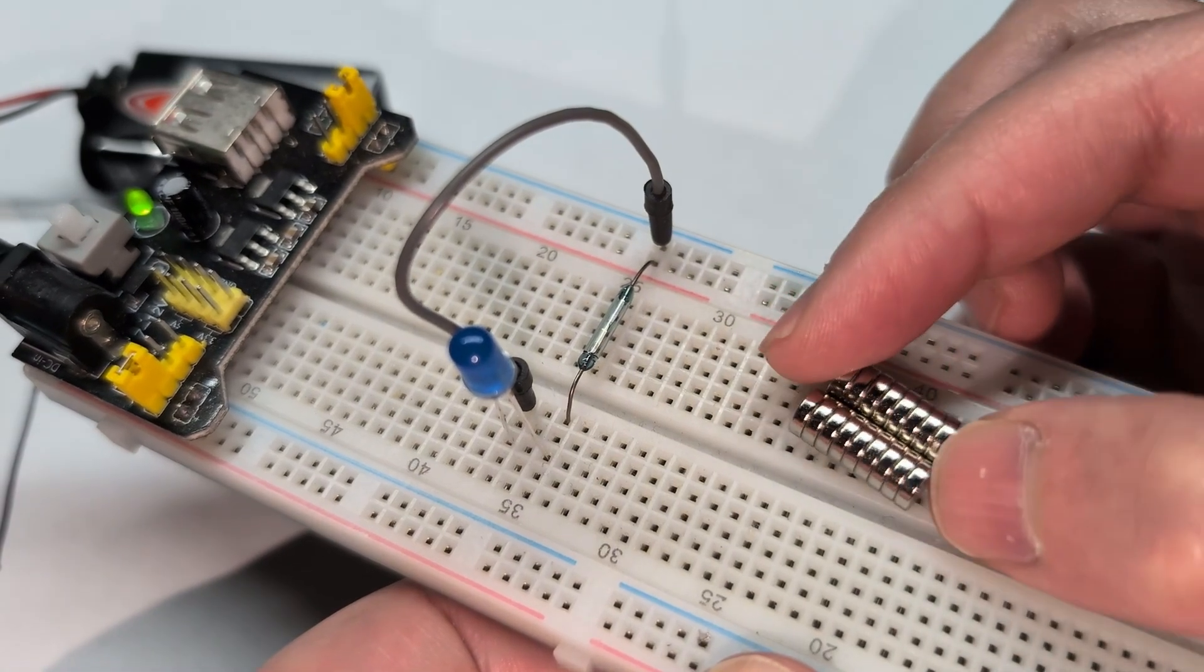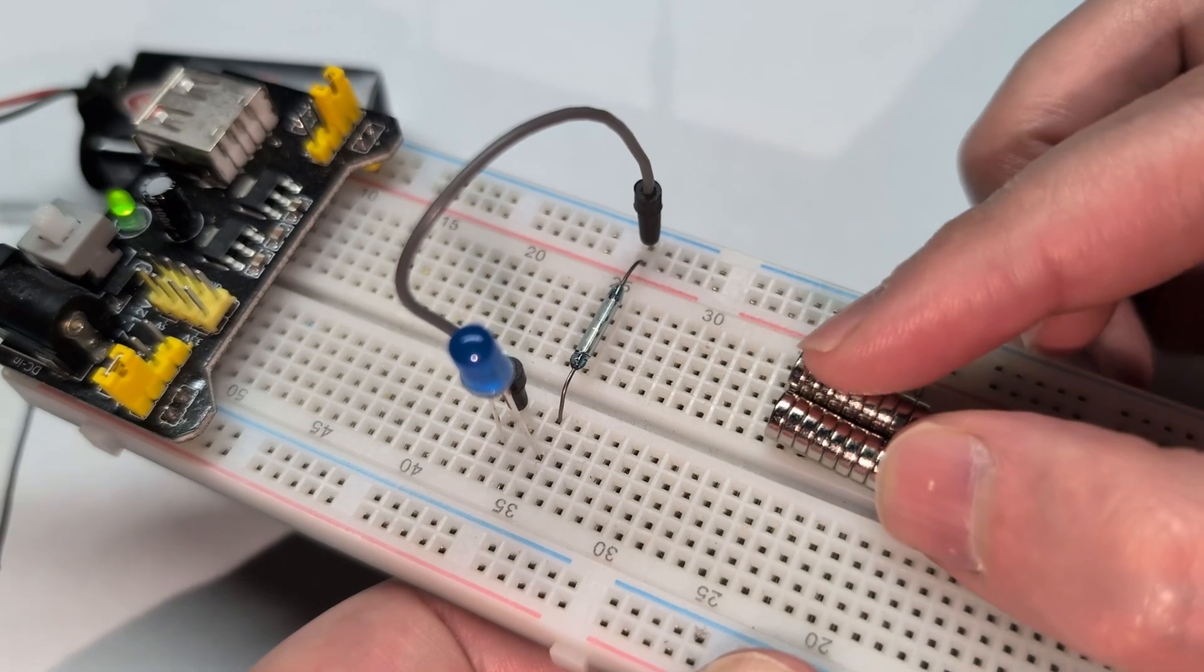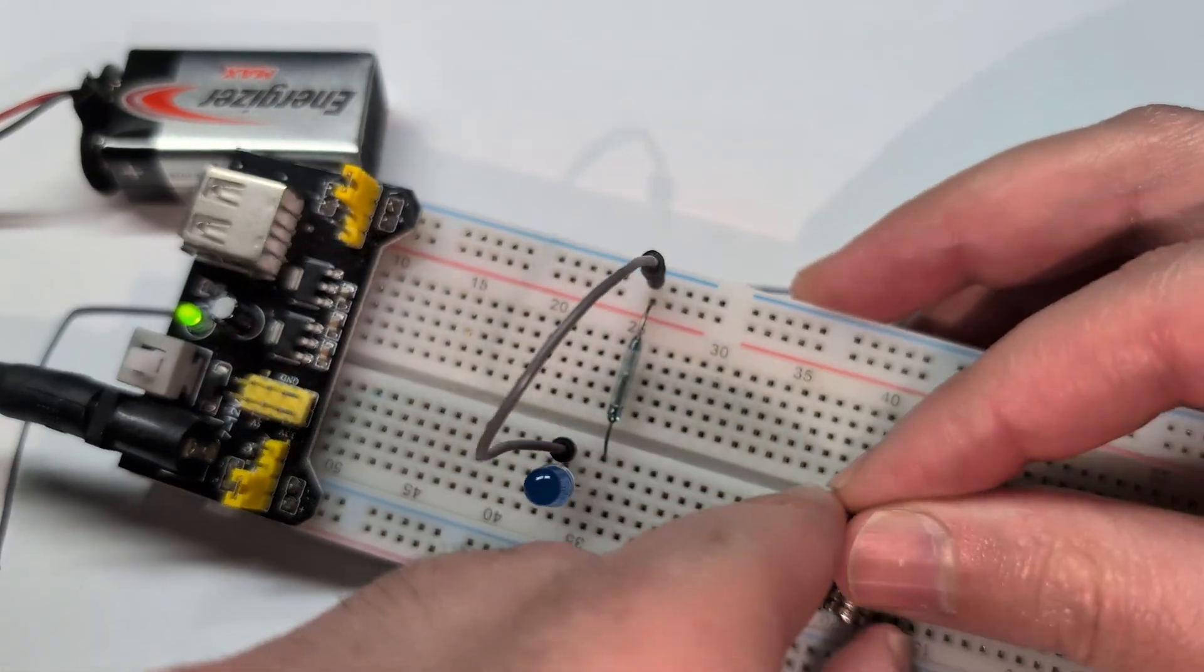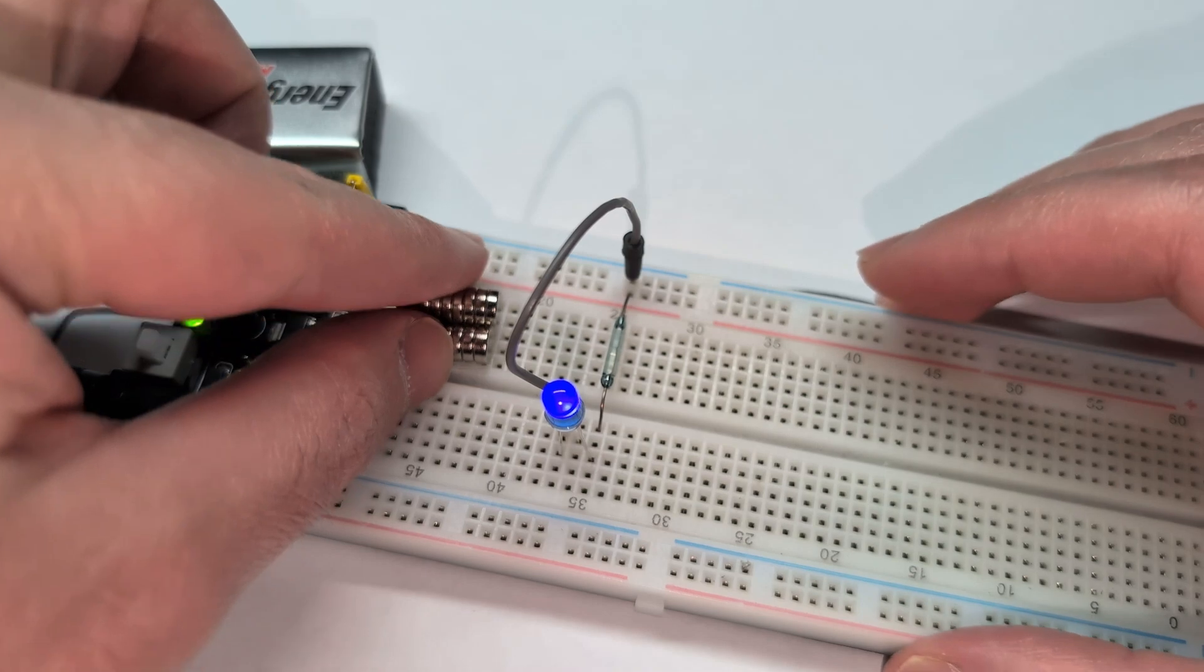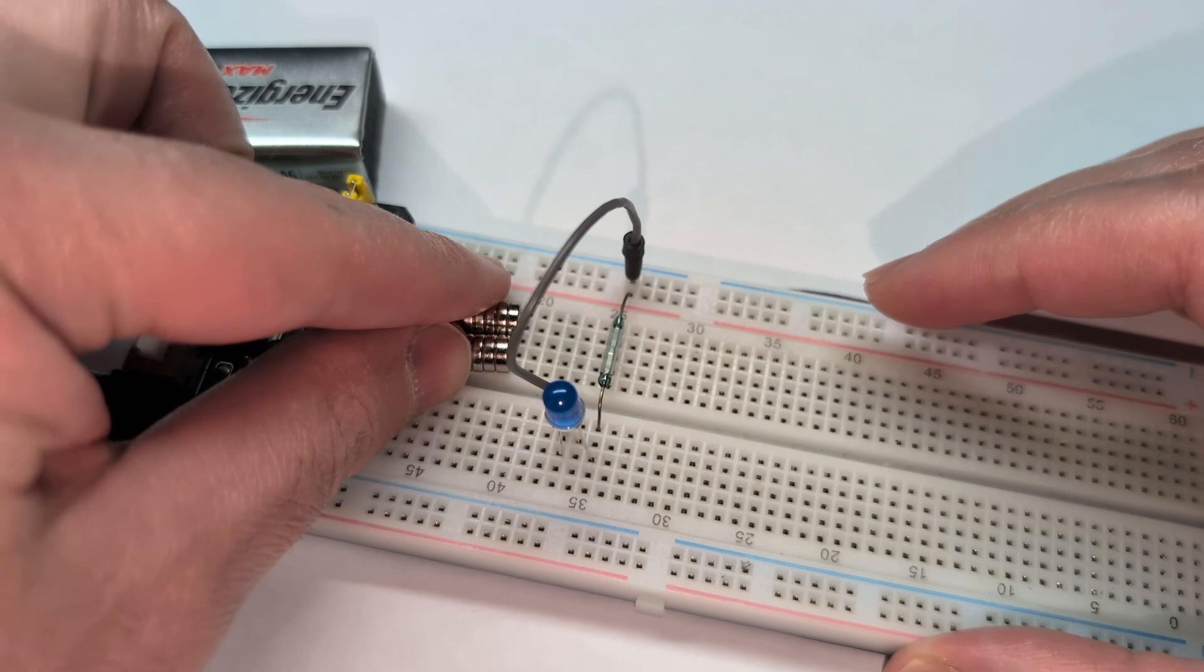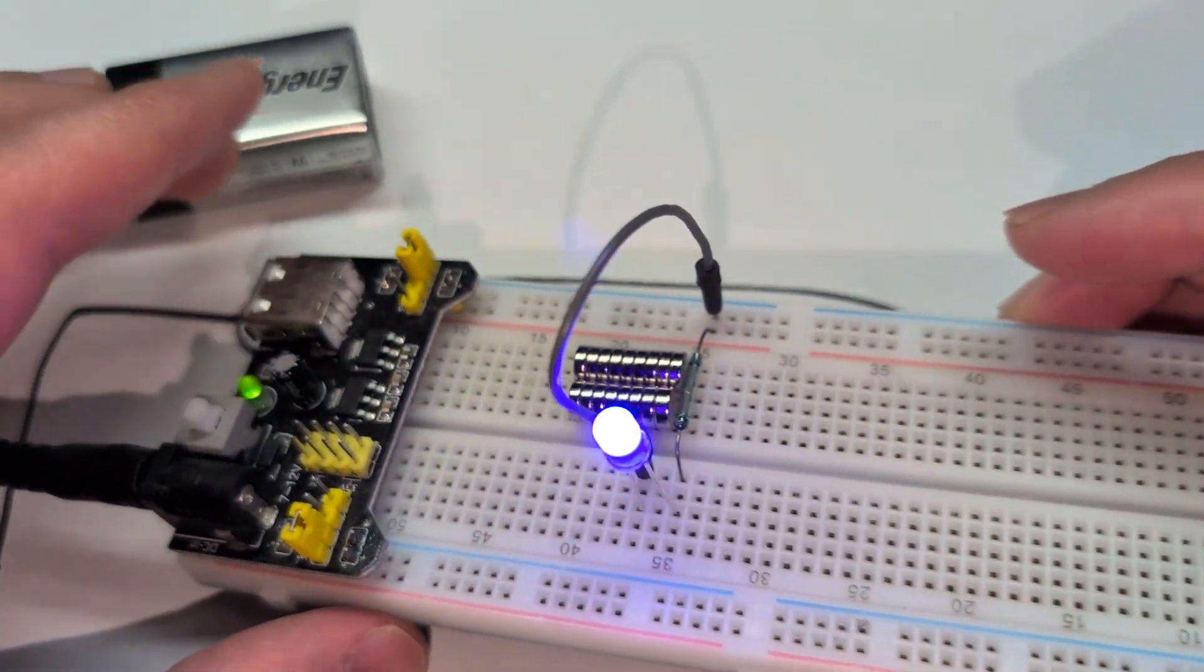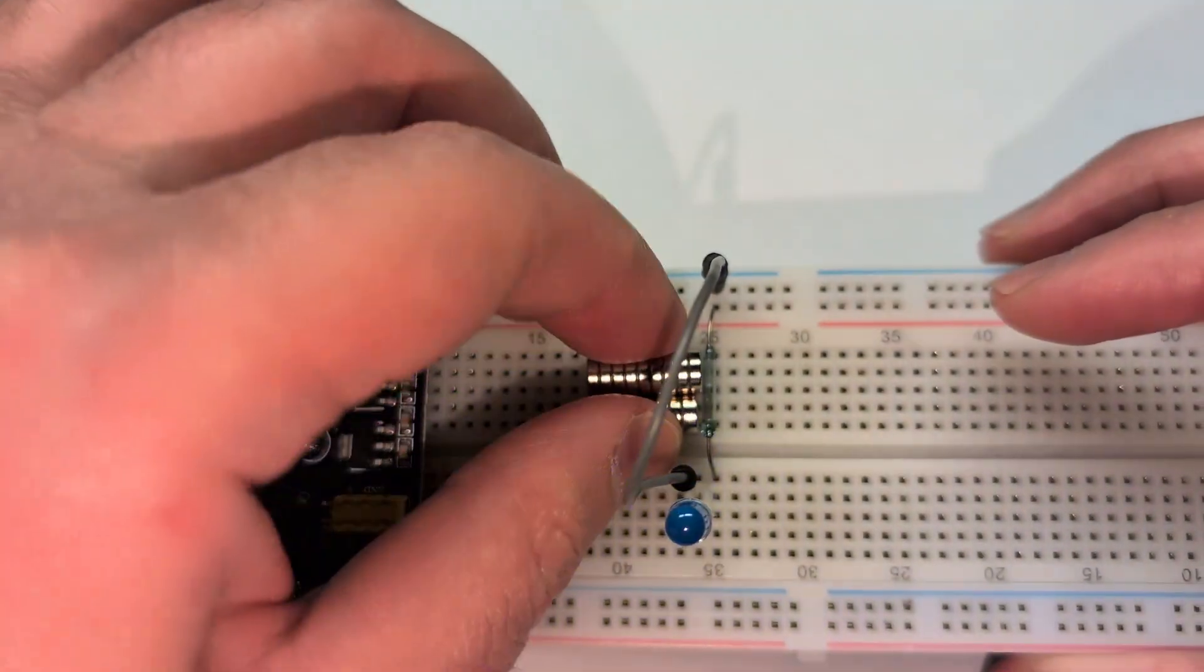It doesn't matter which direction the magnet is, so I can easily turn this on the other way and that would still work just fine. Same if I do it from the other side. As you can see, as I get close you can see the LED start to pick it up, and then as I get closer sometimes you get full connection.